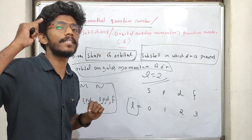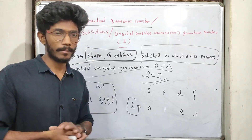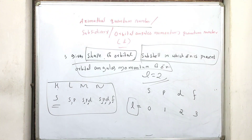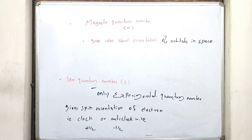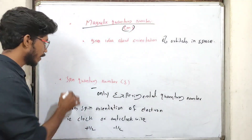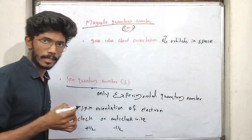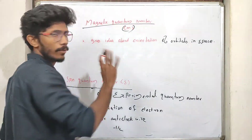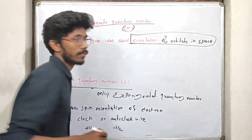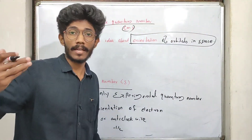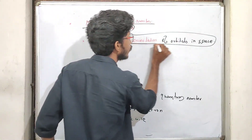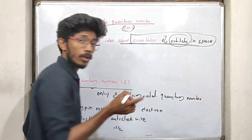Now, we will discuss the magnetic quantum number. The magnetic quantum number gives the idea about the orientation of orbitals in space.